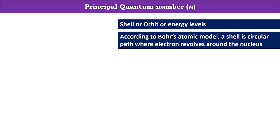According to Bohr's atomic model, a shell is circular path where electrons are continuously revolving around the nucleus.